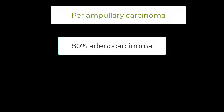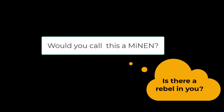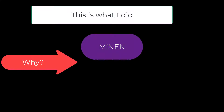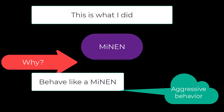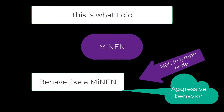What do you call this? 80% adenocarcinoma, 20% neuroendocrine carcinoma. Would you ignore the rules and call this MiNEN? Don't tell me there's no rebel left in you. So, what did I do? I did call it a MiNEN. Why? Because this is going to behave like a MiNEN — it's going to behave like a neuroendocrine carcinoma.